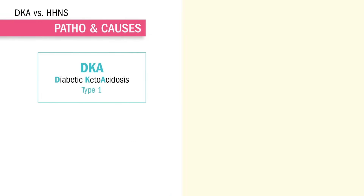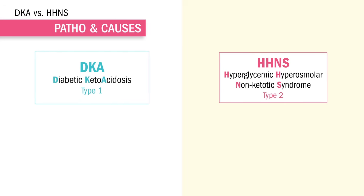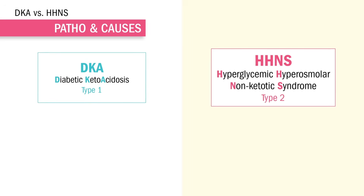So how do you tell the difference between DKA and HHNS? Well, DKA is more common in type 1 diabetes and HHNS for type 2. Think about which letter comes first in the alphabet — D comes first, so it's type 1, and H comes second, so that's how you know it's type 2.